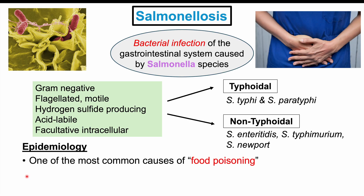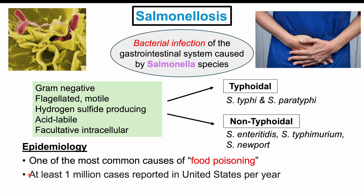Salmonella is one of the most common causes of food poisoning. In the United States, because it's a reportable infection, at least one million cases are reported per year, making it a relatively common condition.